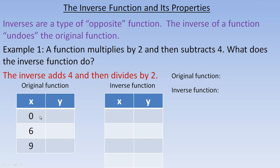The original function multiplies by 2 and then subtracts 4. If we multiply 0 by 2 that's 0, subtract 4 gives negative 4. For 6: multiply by 2 gives 12, subtract 4 gives 8. For 9: multiply by 2 gives 18, subtract 4 gives 14. So the original function has the ordered pairs (0, -4), (6, 8), and (9, 14).